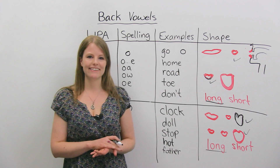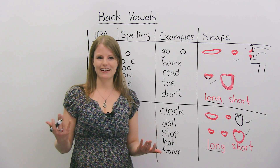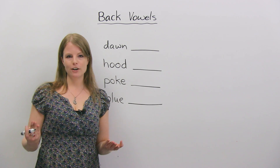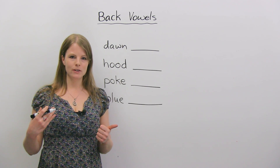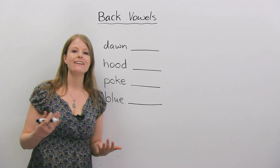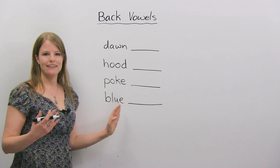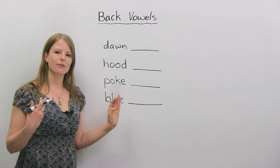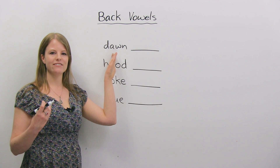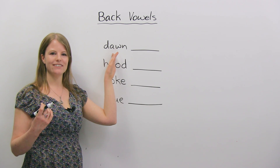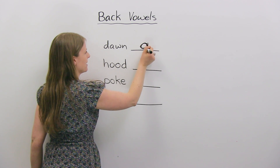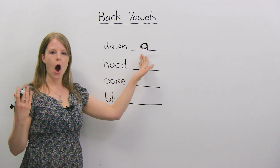Now let's do some practice to make sure you've understood everything. You've learned four different back vowel sounds: "oo", "uh", "O", and "ah". I want you to think about what sounds are in these words. Pay attention to what my mouth is doing, listen to the sound, and think about which sound it is. The first one is "dawn", "ah", "dawn". If you said this is an "ah" sound, you're correct — it looks like an A.